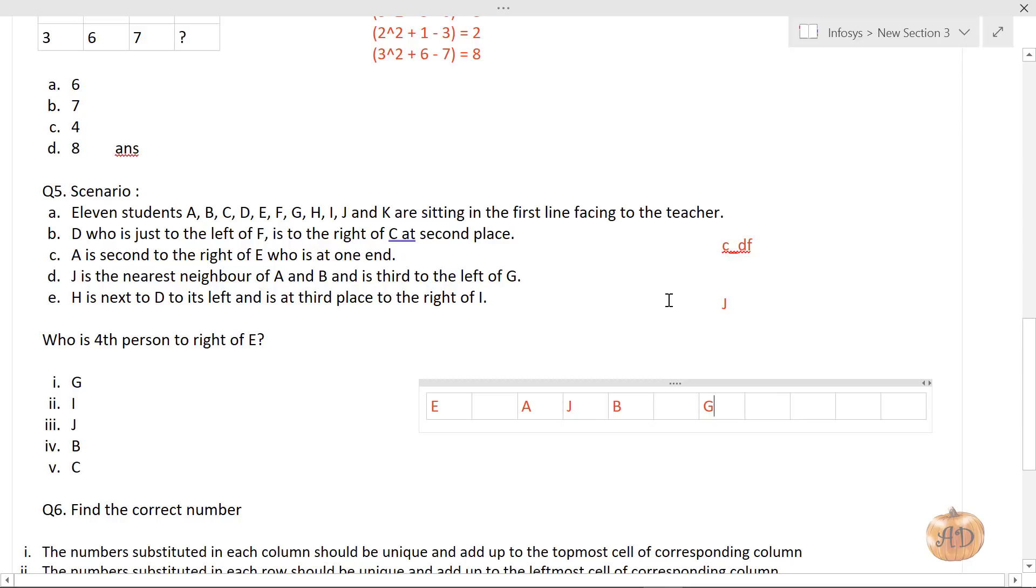Point E: H is next to D to its left. So H is just left of D, at this point. And is at third place to the right of I. Four alphabets together, so the remaining place is this. Now H is third to the right of I. If I were here, third place would be B. But if I is here, then third is H.